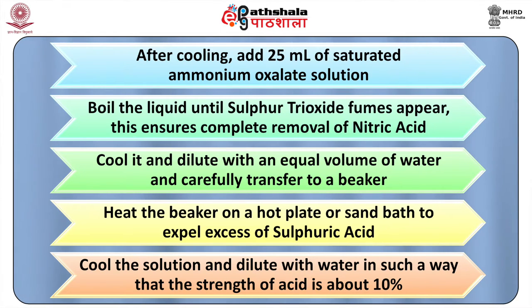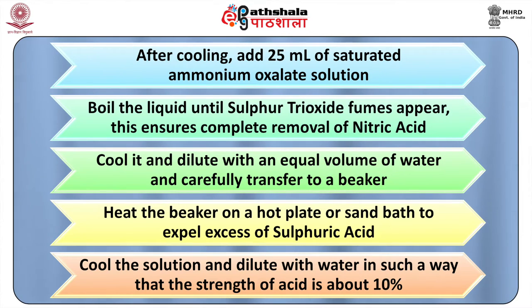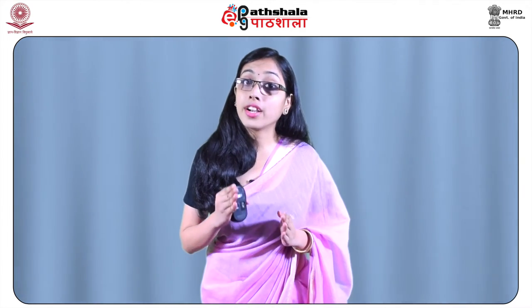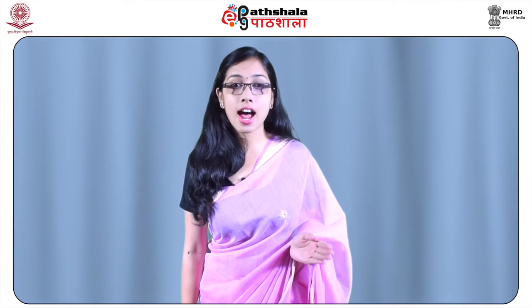The beaker is heated on a hot plate or sand bath to expel excess sulphuric acid. The solution is cooled and diluted with water such that the strength of acid is about 10%. At this stage a precipitate may form containing insoluble salts of lead, bismuth, tin, barium, strontium, or silver, etc. The precipitate is filtered off and tested for metals. The filtrate will contain all other metals except mercury, and is then subjected to systematic group analysis and quantitative determination as required.